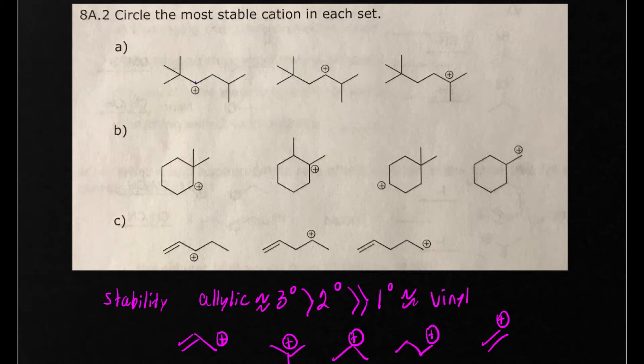First off, identify the positive charge and where it's located, and now count the carbons attached. This is a secondary. This has two carbons attached, it's also secondary. This carbon has three attached, so this is tertiary. So using our stability rules, we would say that the tertiary carbocation is most stable.